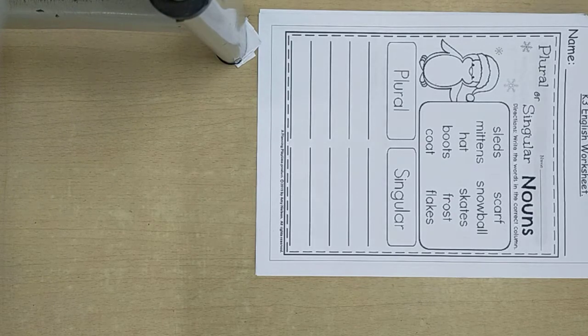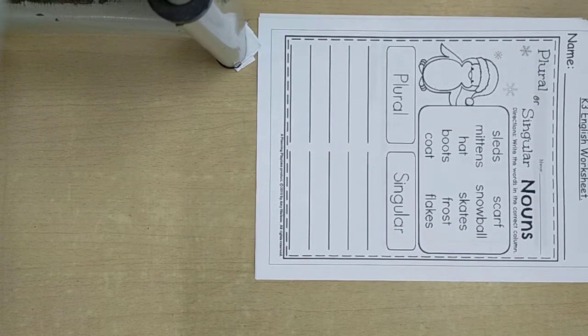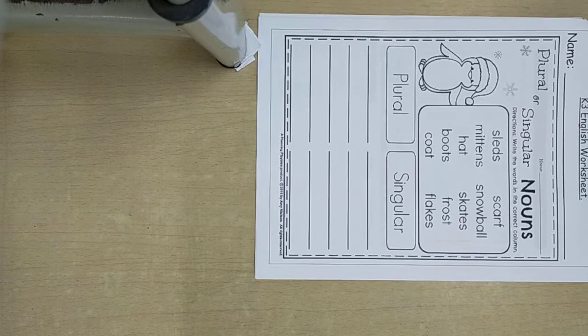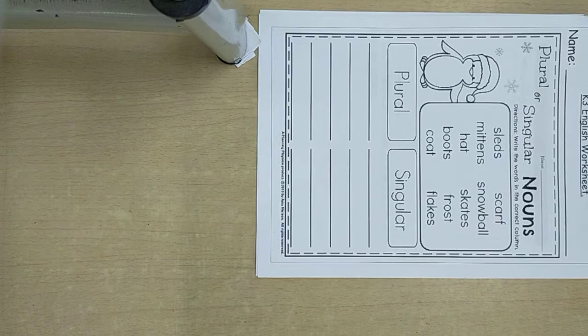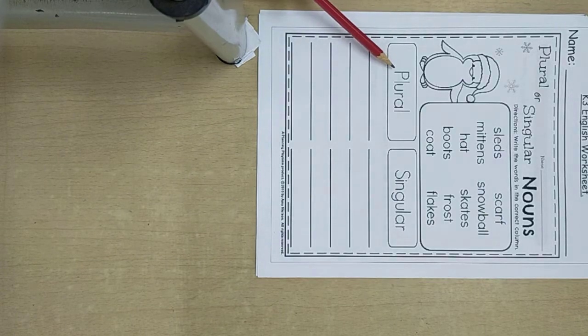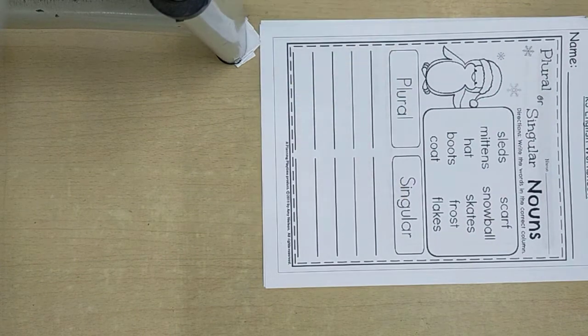Alright class, here is our activity for the afternoon. It tells us, write the words in the correct column. So we have a plural side and a singular side.